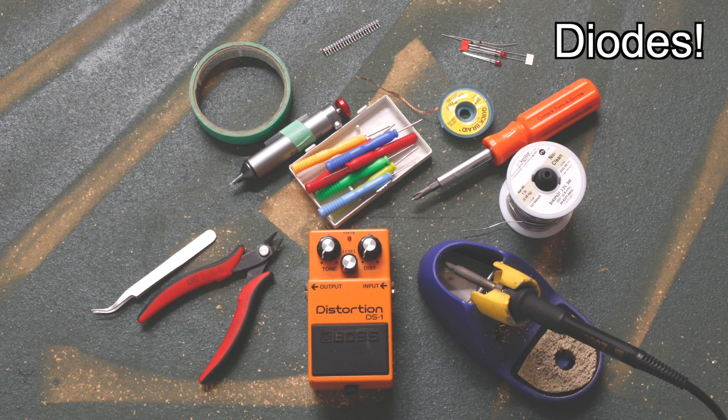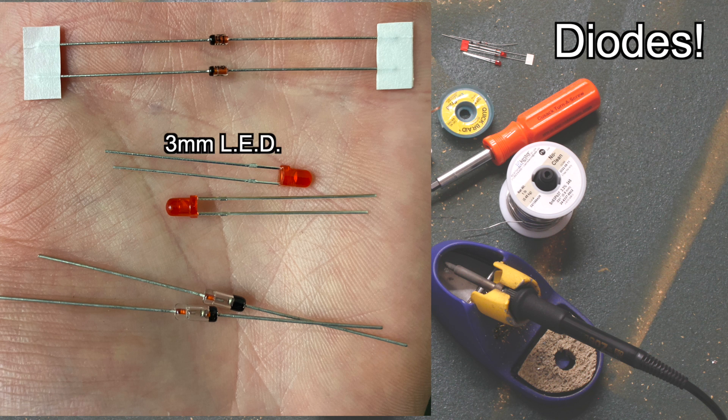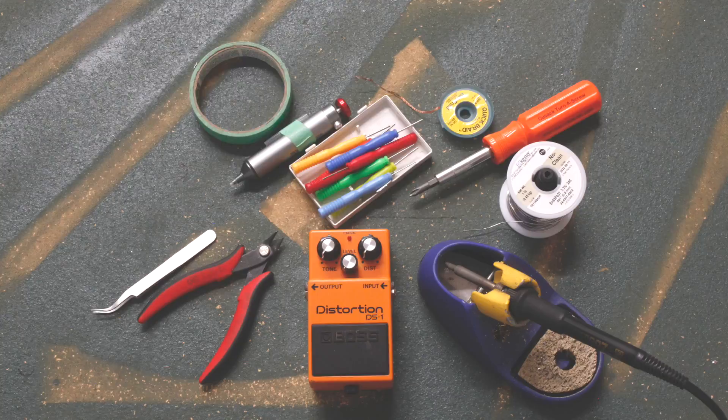And lastly, diodes. We've got a few options here including 1N4148 which is similar to the stock diodes, 3mm LEDs which stands for light emitting diode, and a pair of germanium diodes. Let's get started.